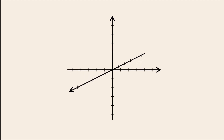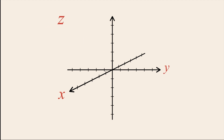These three axes are typically labeled x, y, and z, with the positive x-axis pointing out of the page, the positive y-axis pointing to the right, and the positive z-axis pointing up. Just as in two dimensions, the point where the three axes meet is called the origin. The origin corresponds to the ordered triple zero, zero, zero.